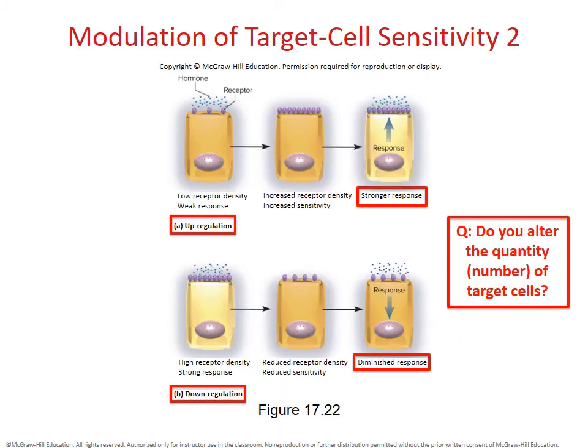The illustration shows that up regulation increases the number of receptors — shown as purple indentations on top of the cell — resulting in a stronger response. Down regulation reduces or eliminates receptors, resulting in a diminished response. To be clear: you do not alter the quantity of target cells; you alter the number of receptors on those cells.